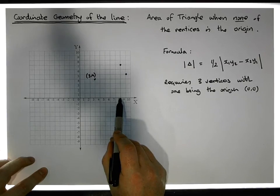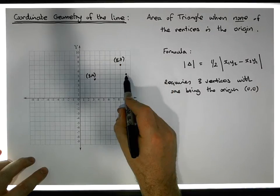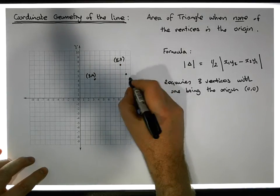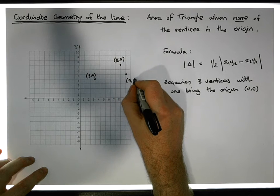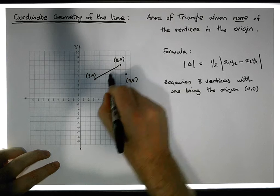This point up here is eight in the x direction and seven in the y direction, so this is (8,7). And finally, this point here which is nine in the x direction and five in the y direction is (9,5). So these three points form a triangle for us.